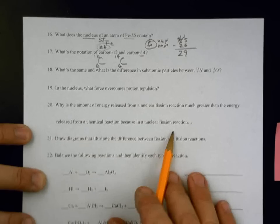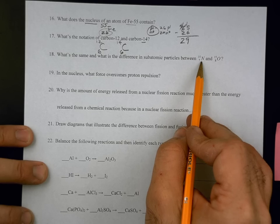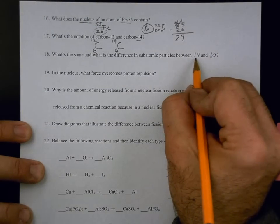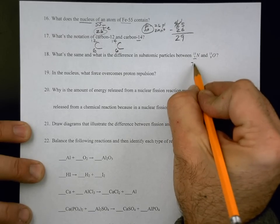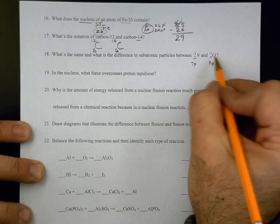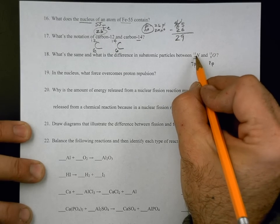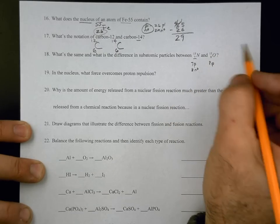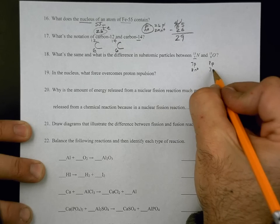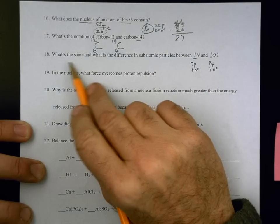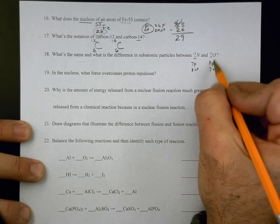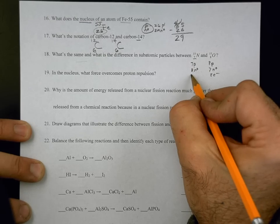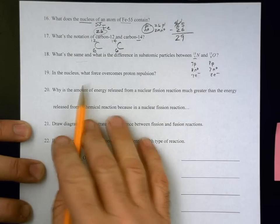What's the same and what is different in the subatomic particles between nitrogen-15 and oxygen-15? What's going to be different is nitrogen will have seven protons. Oxygen will have eight protons. And the difference is the neutrons. 15 minus seven will be eight neutrons. And 15 minus eight will be seven neutrons. So that's what's different. Oxygen is going to have eight electrons, but usually we're just concerned with what's going on in the nucleus. Since there's seven protons, there'll be seven electrons in nitrogen.